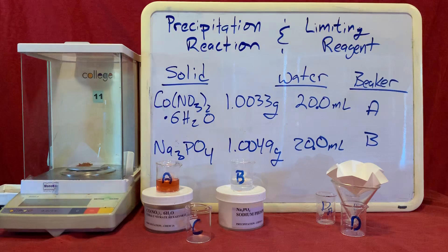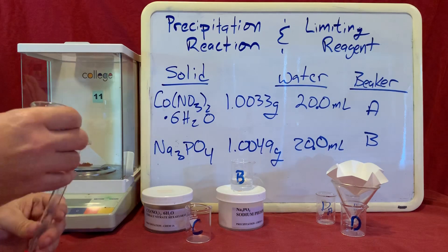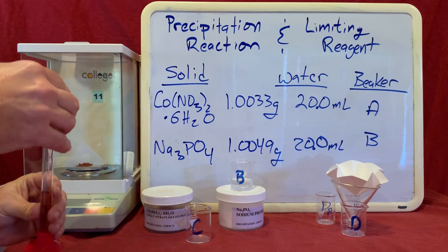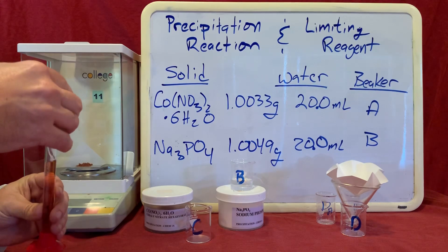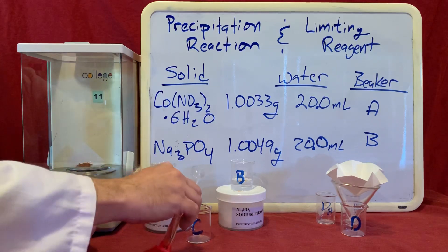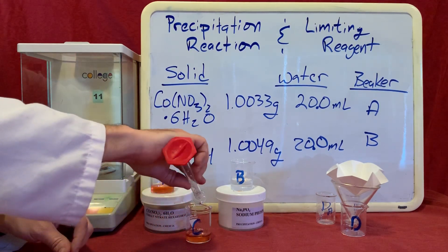In the next portion of this lab, we're going to mix approximately half of solutions A and B into beaker C. Now I want to make sure I don't overdo this, so while I could estimate it, I'm going to actually measure out 10 milliliters of solution A and pour that into beaker C.